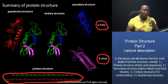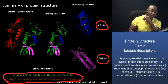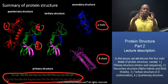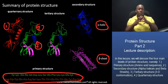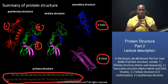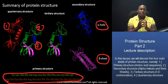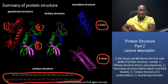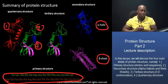At the quaternary level, we have the aggregation of more than one polypeptide chain — as you can see, that's one, two, and three — to form a single functional protein. The forces of interaction involved at the tertiary level are the same. The only difference is that they interact between polypeptide chains and not within a polypeptide chain.